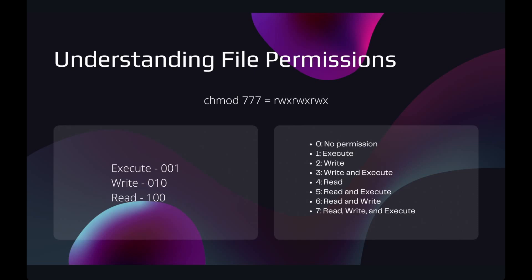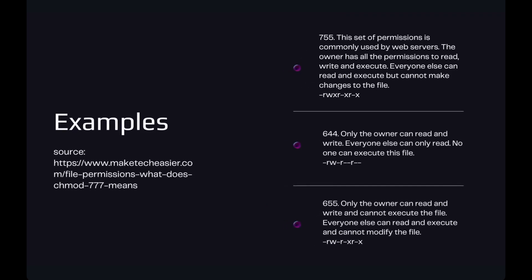Let's look at a few more examples. Take the number 755, which is commonly seen in web servers. The first bit 7 means the owner has read, write, and execute permissions. The second bit 5 — since 4+1=5 — means the group can read and execute but cannot write to the file. The last 5 similarly means other users can only read and execute the file but cannot write to it.